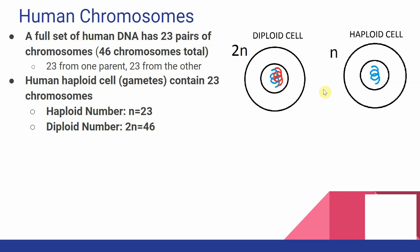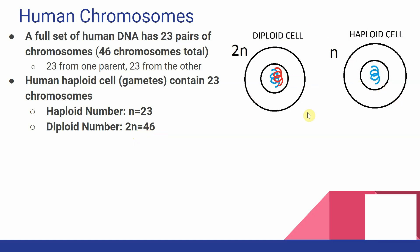In this picture here, we can see a diploid cell — it is 2n, with two copies of each chromosome. These would be homologously paired chromosomes. Do notice they are a little bit different and have different genetic information, compared to our haploid cell over here, which is only going to have one copy of that chromosome.